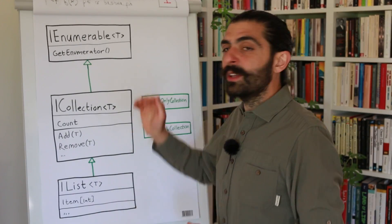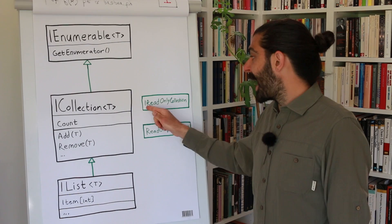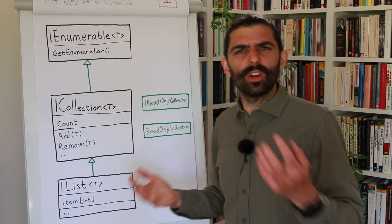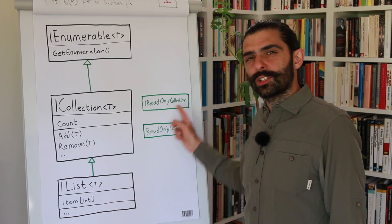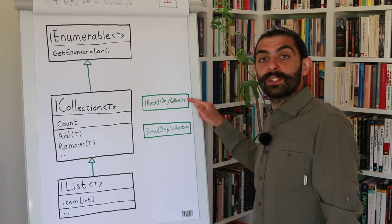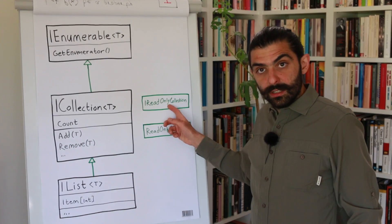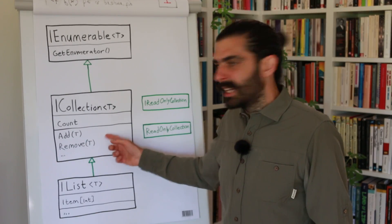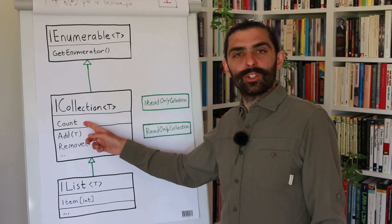Given the terminology used in these other three types, we would assume that something called IReadOnlyCollection would not be ordered, because it's called collection and not list. So it's obviously not a subtype of IList. But is IReadOnlyCollection then a subtype of ICollection? Note: I forgot to add the generic type parameters for these two types here on the right — it doesn't really matter for this example. Is IReadOnlyCollection a subtype of ICollection? No. Because if you have an ICollection, you can add items to that collection and remove items from it.